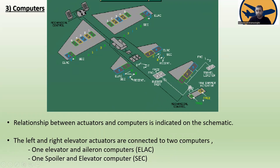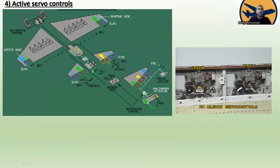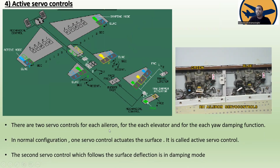For active servo controls, you can see in the real picture the green and blue colors. The right-hand aileron outer servo control is green and the inside is blue. There are two servo controls for each aileron, for each elevator, and for each yaw damping function. In normal configuration, one servo control activates the surface — that is the active servo control.